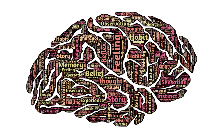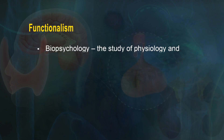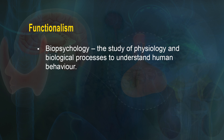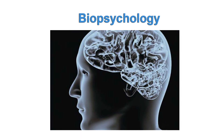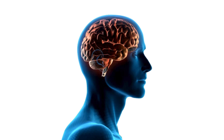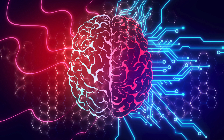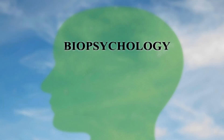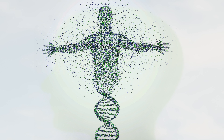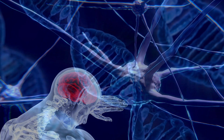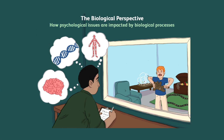This led the way for a new school of thought — biopsychology — the study of physiology and biological processes to understand human behavior. This field of psychology is often referred to as biopsychology or physiological psychology. This branch of psychology has grown tremendously in recent years and is linked to other areas of science including biology, neurology, and genetics.